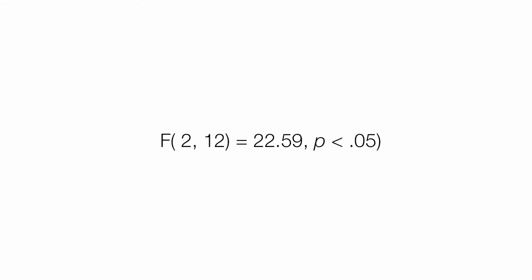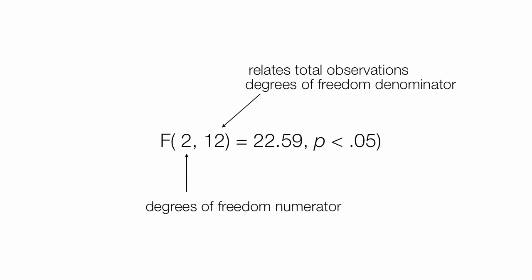The results should look something like this. And this is the F test. That's what the F stands for. The first value is degrees of freedom of the numerator, and it relates to the number of groups or samples under study. The 12 is the degrees of freedom of the denominator, and it relates to the total number of observations.